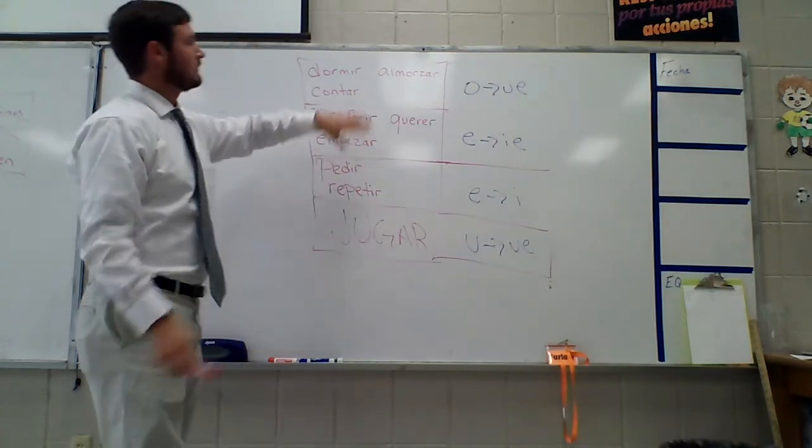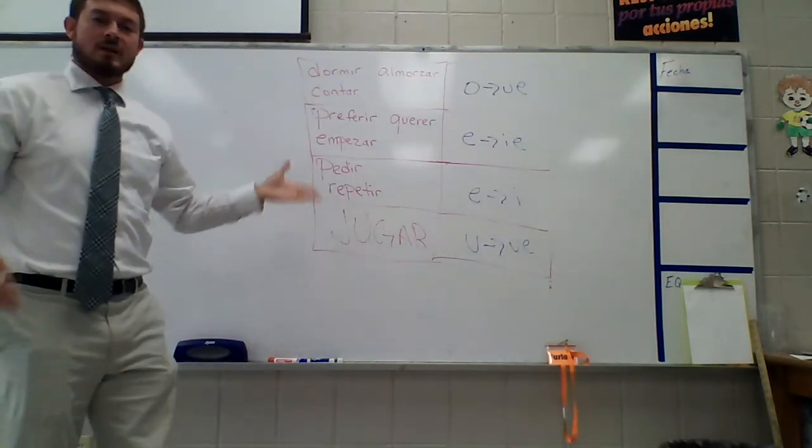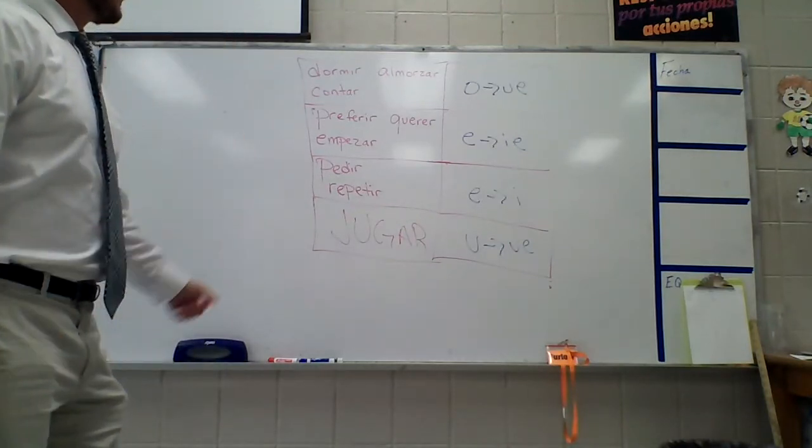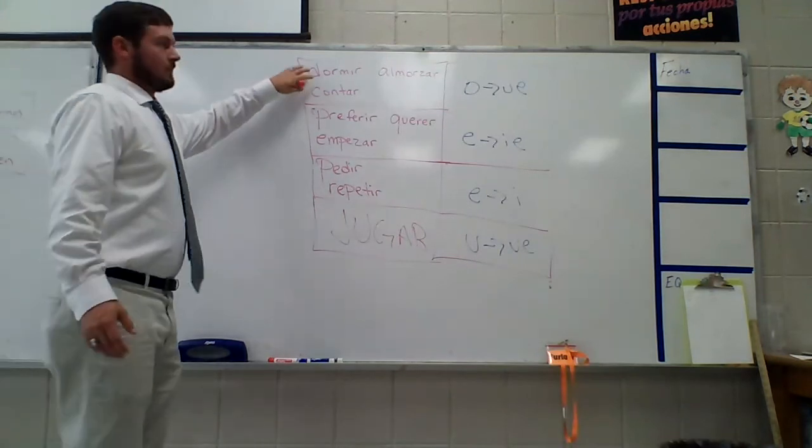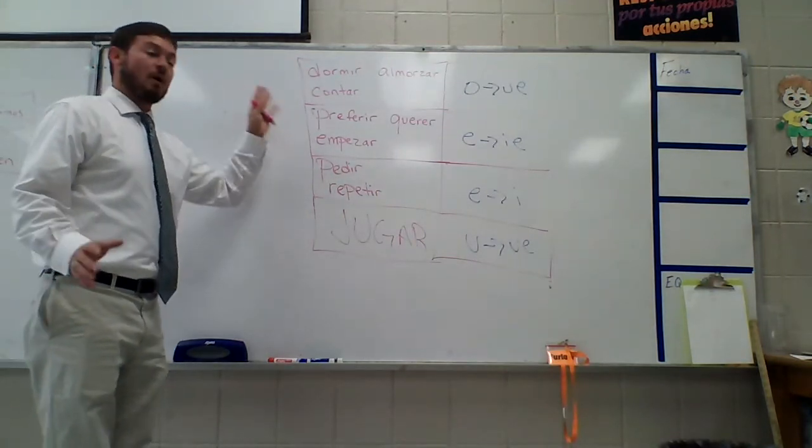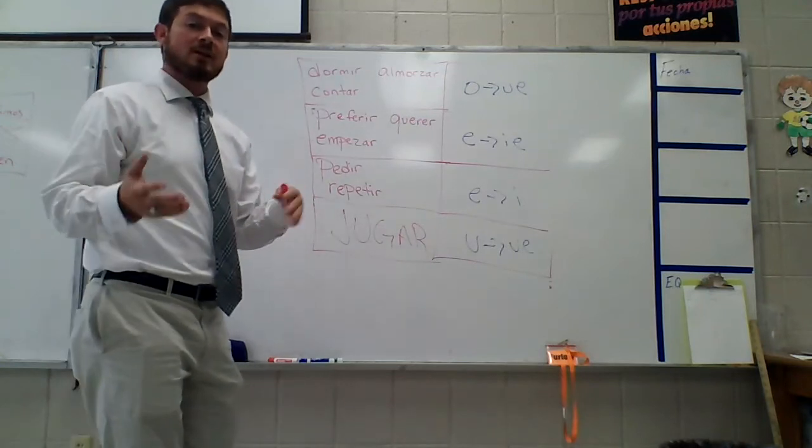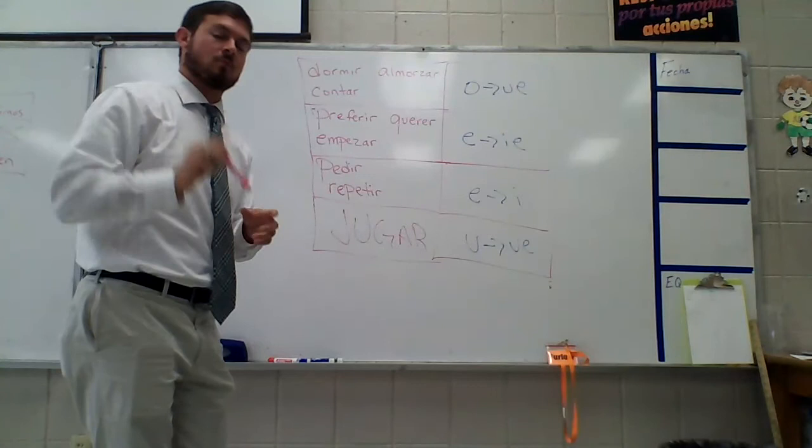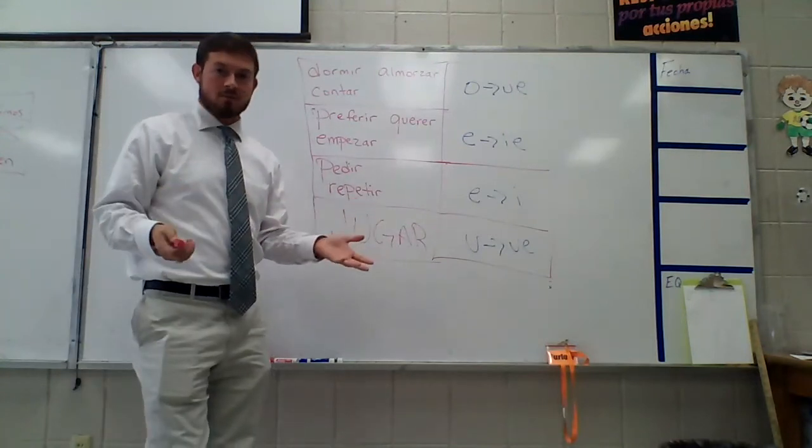But these are it. Again, there are more examples of these verbs. But I'm drawing a real big blank right now. So, O to U-E, E to I-E, E to I, U to U-E. They're all based on finding your stem, then making your change with everything except for nosotros. Again, remember that boot shape if you want to remember it that way. There are quite a few different ways you can memorize this.